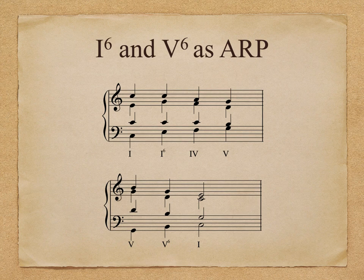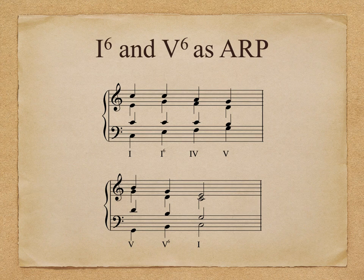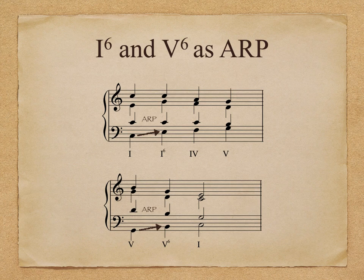First inversions of I and V can appear as part of a bass arpeggiation of a static chord. The inversion appears simply as an embellishment of the chord, prolonging it and its function. Observe in the examples how both the I and V chords move from root position to first inversion by arpeggiating the tonic and dominant triad's roots respectively, and then adding the third in the bass. These examples are classic textbook illustrations of I⁶ and V⁶ expanding I and V as part of an arpeggiation.